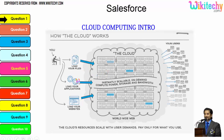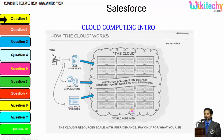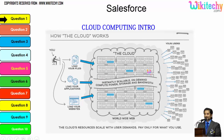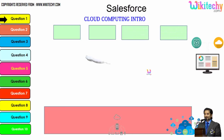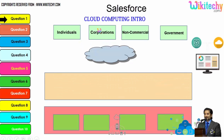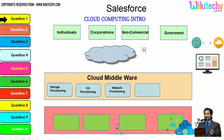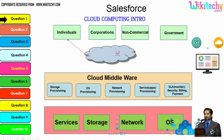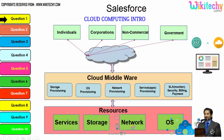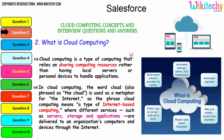Cloud computing is like renting servers or services and utilizing them. You are able to see this cloud — I can load files, load applications, or load my website so that any user can access it, and tracking or monitoring becomes really easy. There are different types of users: individuals, corporations, non-commercial people, and government. From any of these users, they are able to access services, storage, network, or operating system via the cloud middleware — specialized software given by the cloud service provider to access resources.